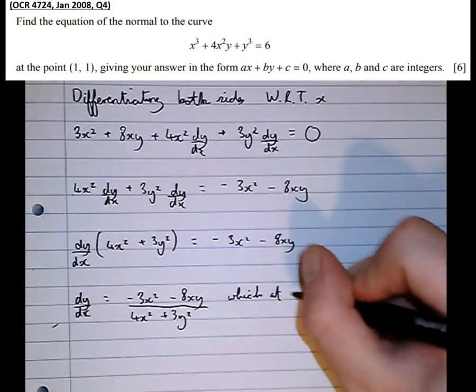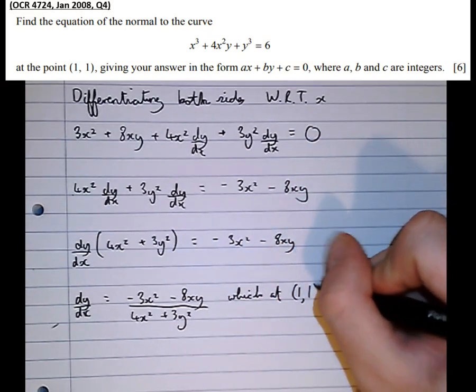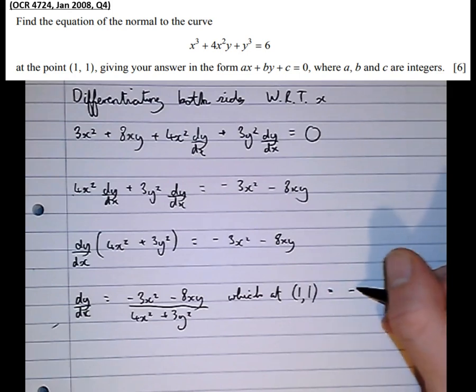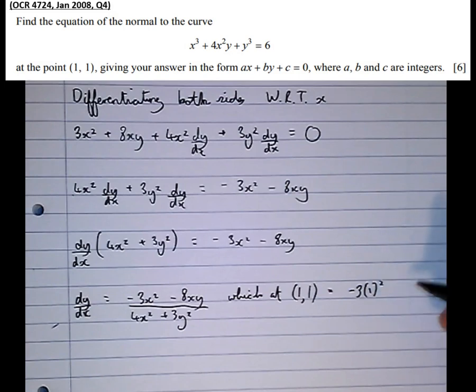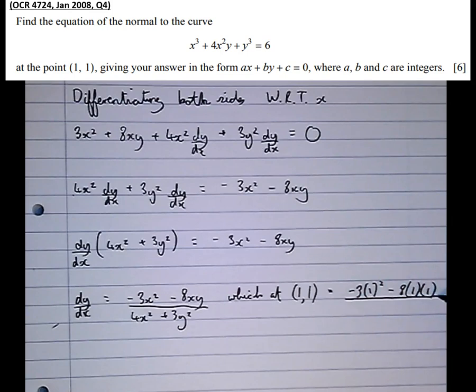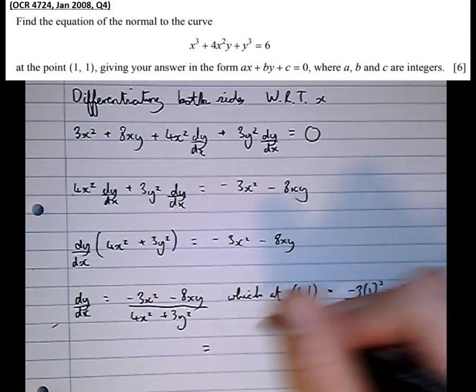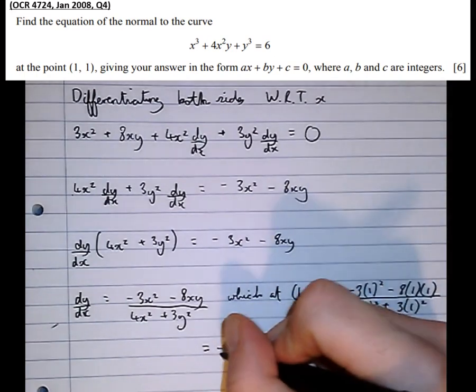Which, at the point (1, 1), sub y equals 1 and x equals 1 in, is equal to minus 3(1²) minus 8(1)(1) all over 4(1²) plus 3(1²) equals minus 11 over 7.